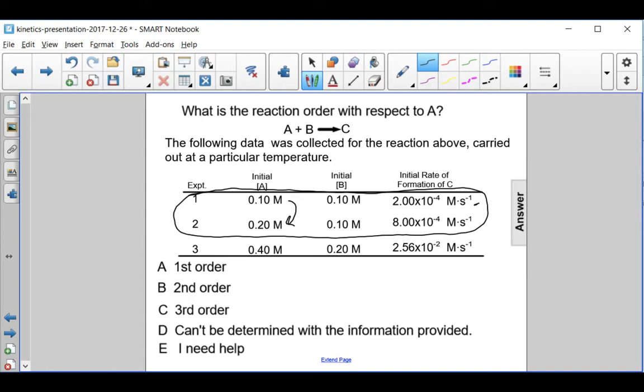We can see that from 2 times 10 to the minus 4 to 8 times 10 to the minus 4, the rate of reaction is quadrupling. So when you double the concentration, the rate of the reaction quadruples.